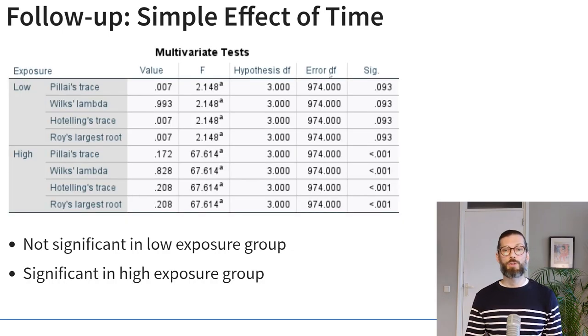Depending on which variable is your primary interest, you may choose either output table. In this case, time is the main effect of interest and exposure modifies it, so my main conclusion is: there is no significant effect of time on depression for the low exposure group, but there is a significant effect for the high exposure group. Notice that we've been conducting many post hoc tests on the same sample, so we could apply a lower alpha level using Bonferroni's correction. Here all p-values are smaller than 0.001, so it doesn't change the conclusions, but in other cases a more conservative alpha level may be warranted.